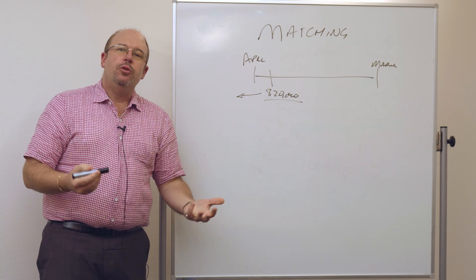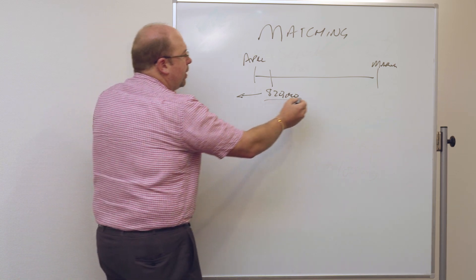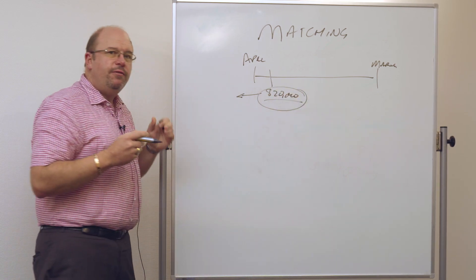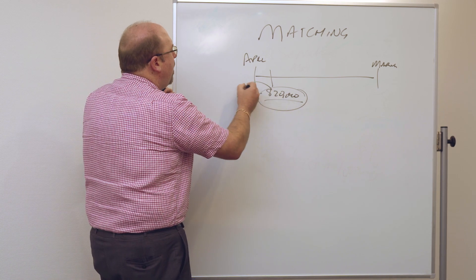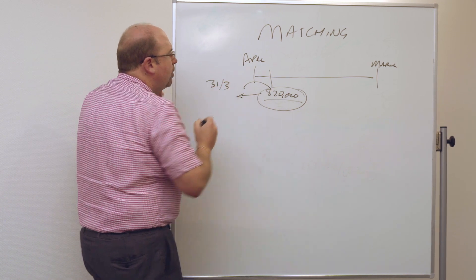So when we come to do the profit, we have to bring the $20,000 received in April and accrue it back into March the year before.